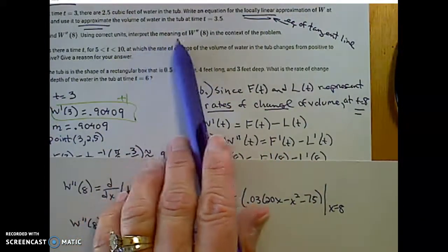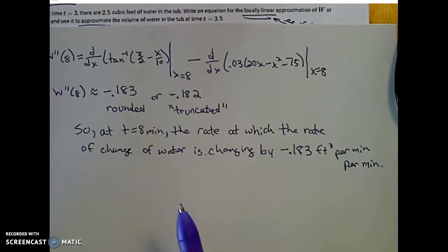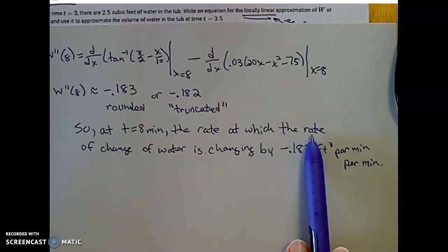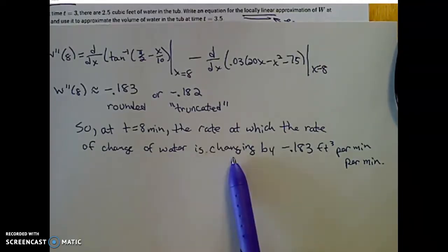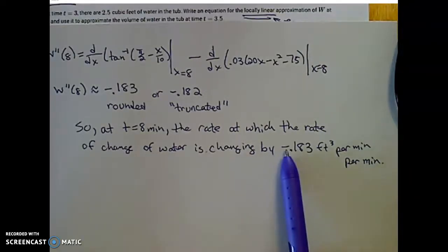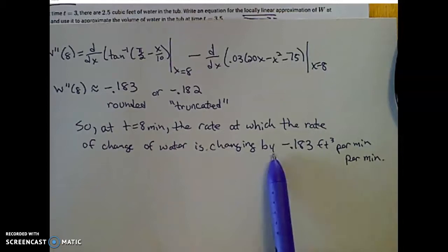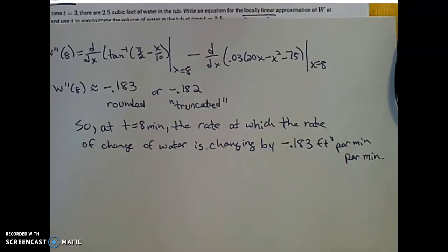Let me see how I would state this. Because I need to be a little bit careful. I need to then interpret the meaning of this in the context of this tub filling problem. So this is how AP wanted to see your response. At time 8 minutes, the rate at which the rate of change of water is changing by negative 0.183 cubic feet per minute per minute. You could also say the rate is decreasing by 0.183 cubic feet per minute per minute.